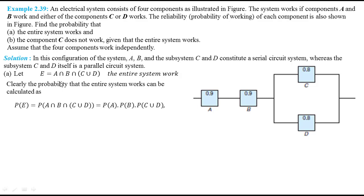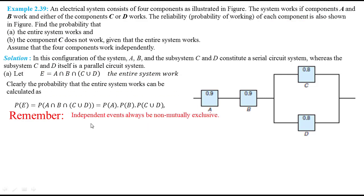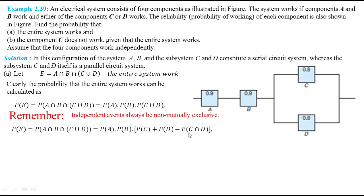The probability of A intersection B intersection (C union D) can be written as probability of A multiplied by probability of B multiplied by probability of (C union D). Remember that independent events are always non-mutually exclusive events. Therefore, we use the addition law of probability for non-mutually exclusive events for components C and D.